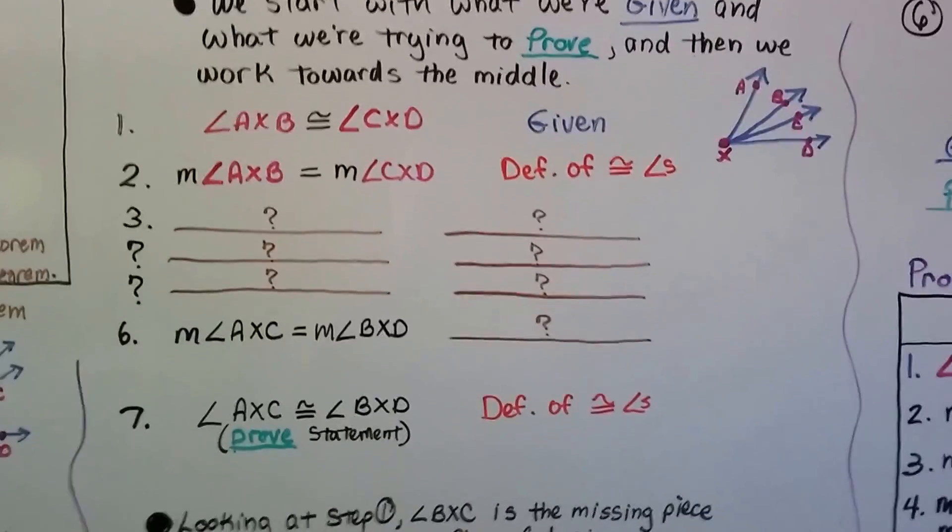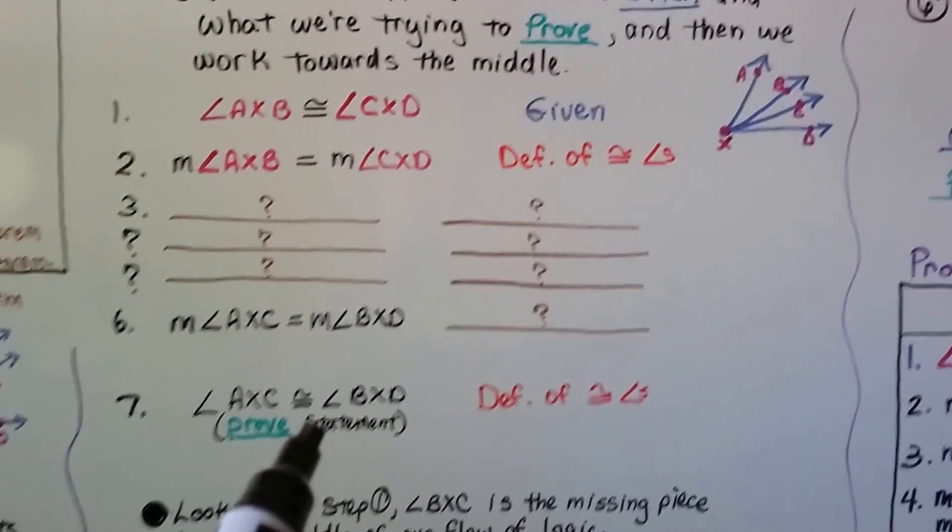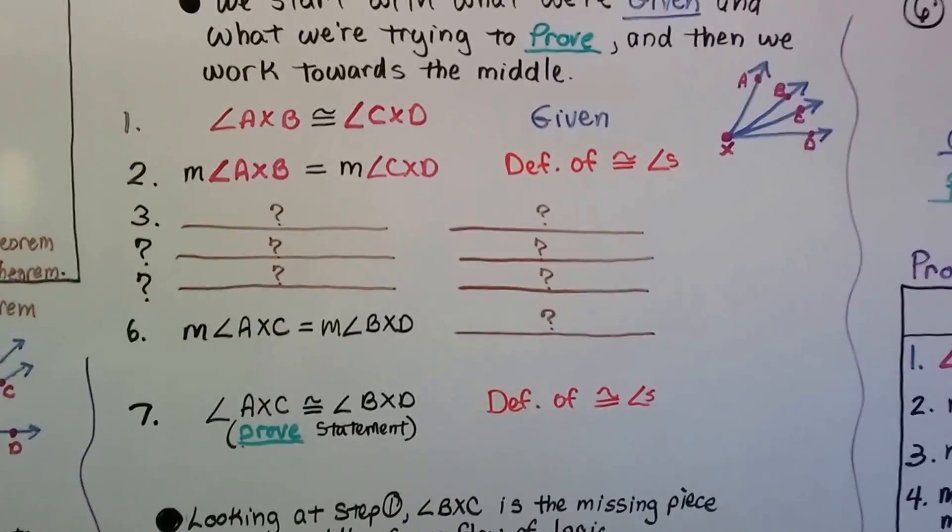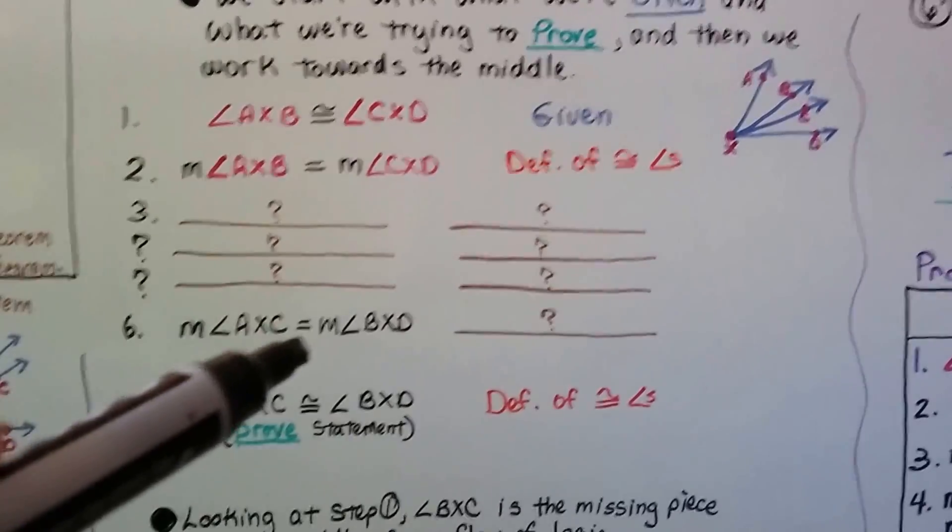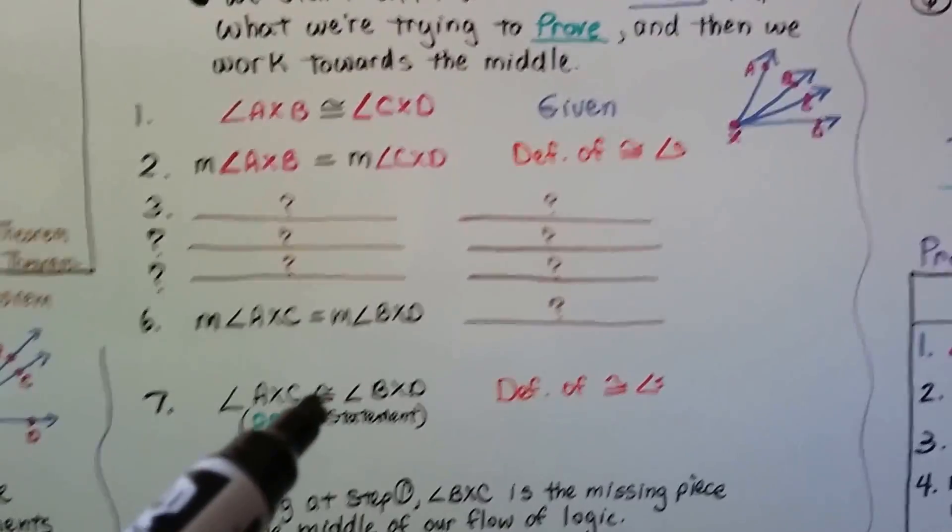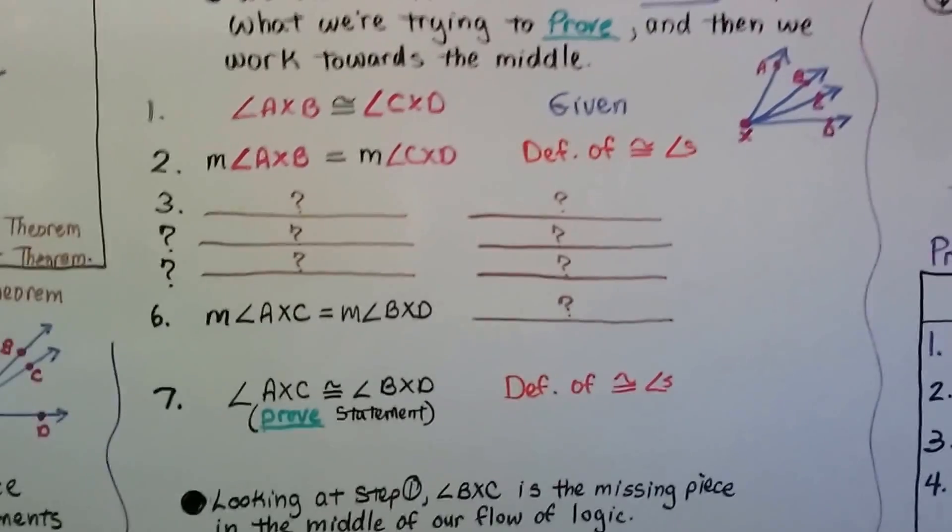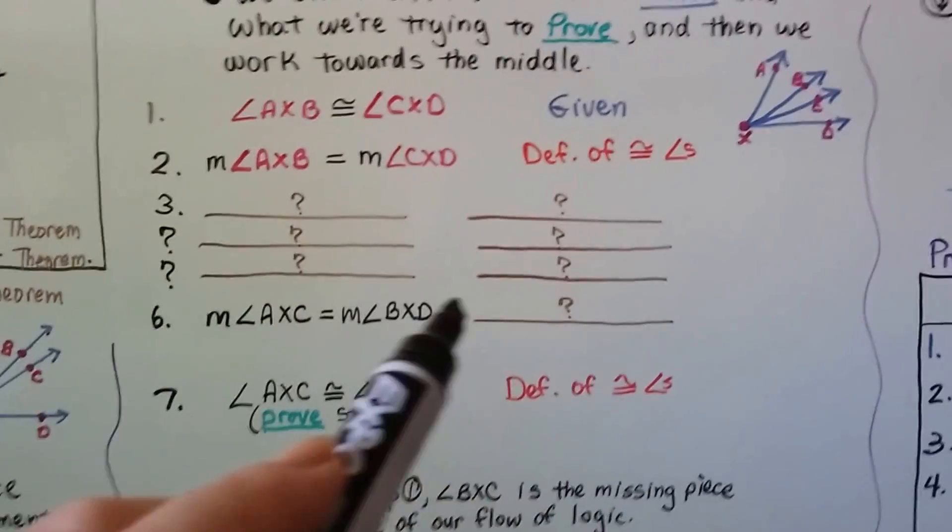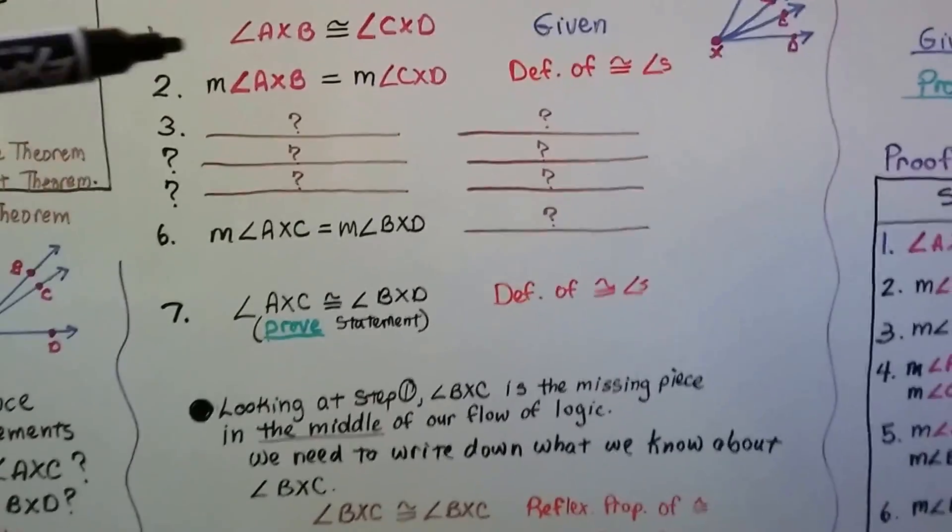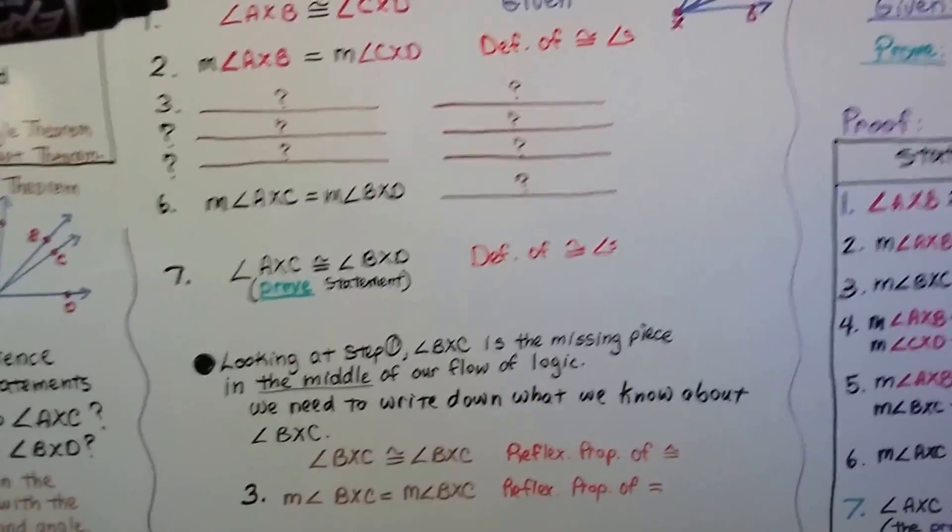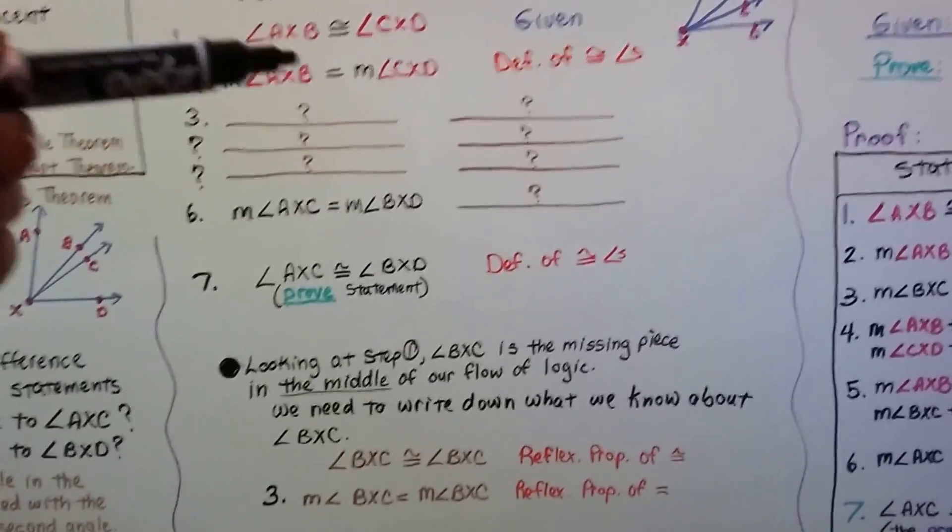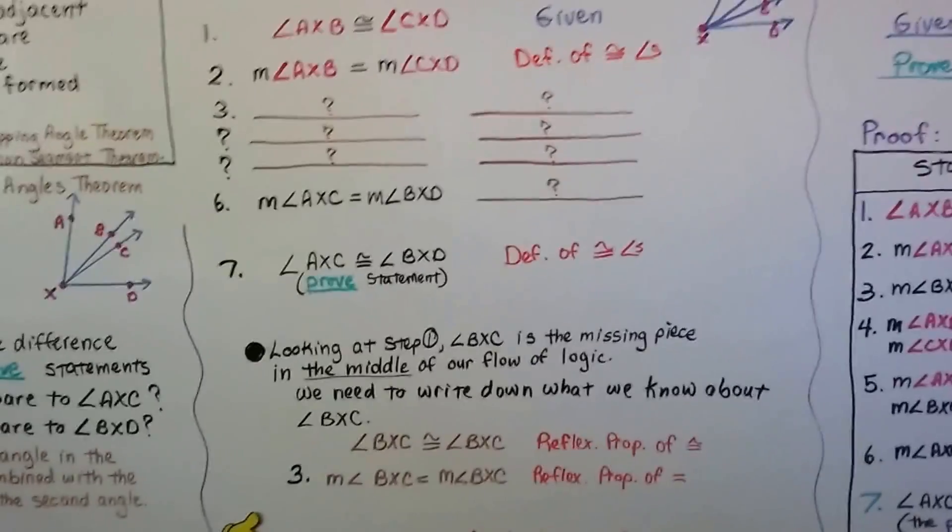We can jump down to number 7 again and say, well, these are congruent. We can say that's the definition of congruent angles. But we're missing the pieces in the middle. We can move up from 7 and say the same thing. If this is congruent, that's equal. But it's not going to be the same reason. And looking at step 1, angle BXC is the missing piece in the middle of our flow of logic. We don't have that in there, that little middle angle.